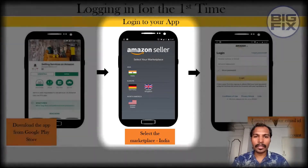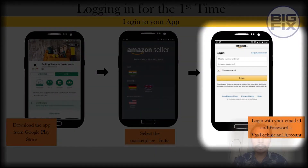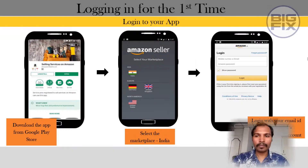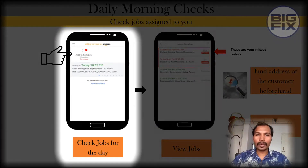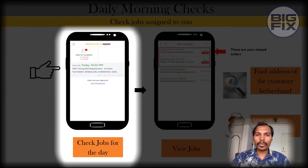In the next page, it will ask for login ID and password. Enter the login ID and password which is provided to you and click login. On the main page of the app, towards the left top corner, there will be a box which will indicate the number of calls assigned to you, and the information of the first call will be provided.